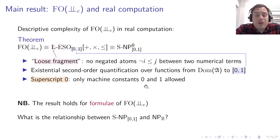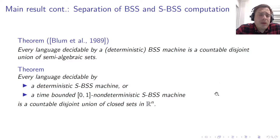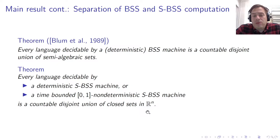This is the main result of our paper: we characterized our logic with a fragment of the Grädel-Meijer logic and proved that this logic characterizes our new complexity class. To show this class is genuinely weaker, we characterize the decidable languages of SPS machines. A result by Blum et al. characterizes languages decidable by a BSS machine as countable disjoint unions of semi-algebraic sets. We show something stronger: every language decidable by a deterministic SPS machine, or by a time-bounded 0-1 non-deterministic SPS machine, is a countable disjoint union of closed sets in the usual topology of Rⁿ.